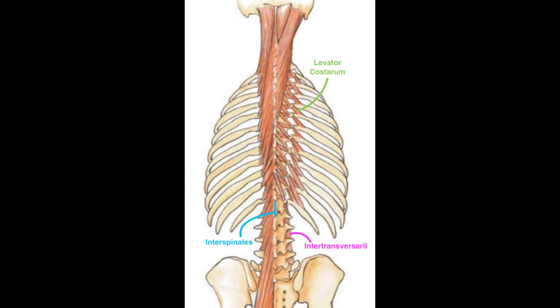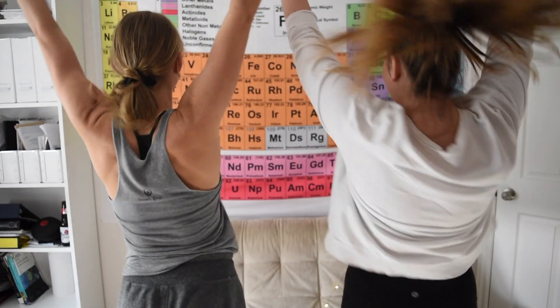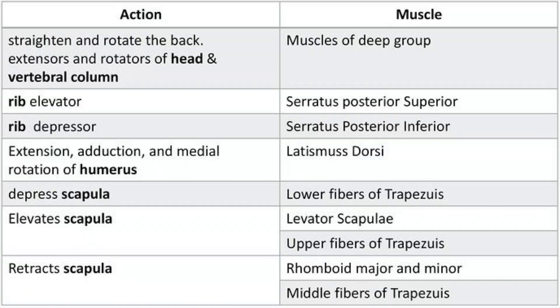Finally the rotatores in the thoracic region — from one to two vertebrae they're making insertions. And just when you thought we were at the end, a final group called segmental enters in. Between spinous processes are interspinalis; transverse to transverse are intertransversarii; lateral to the ribs you'll find levator costarum. And there you have it — the muscles of the back.